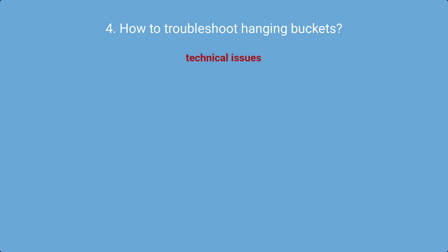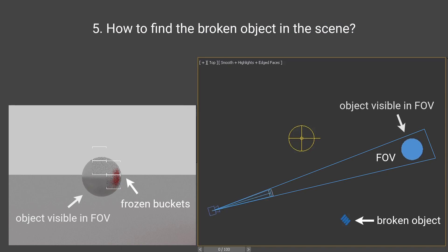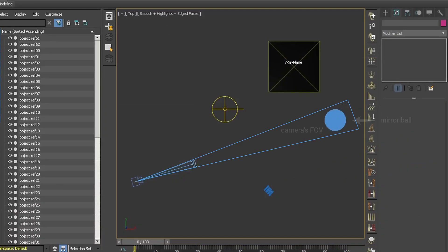For technical issues, it's a zero-or-one situation — they must be fixed. Broken models need to be repaired, or sometimes it's faster to remodel from scratch. Unsupported materials and maps need to be deleted. Sometimes trying the progressive image sampler helps. The problematic item doesn't have to be where the bucket is stuck — it could be in a different part of the image or outside the field of view. I'll now show a method to find such elements.